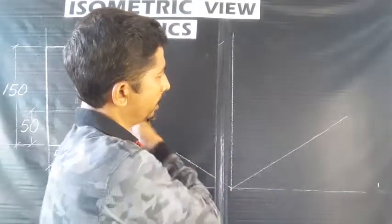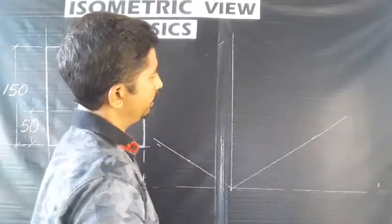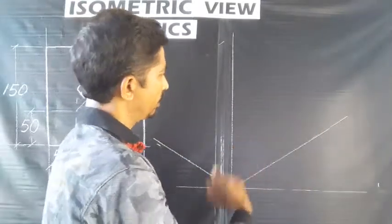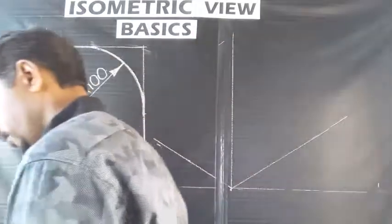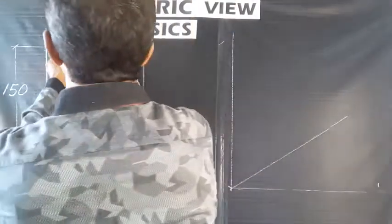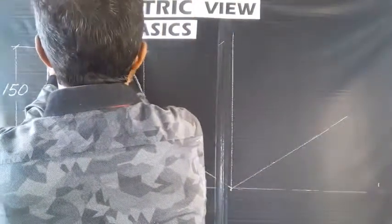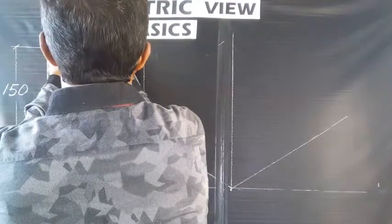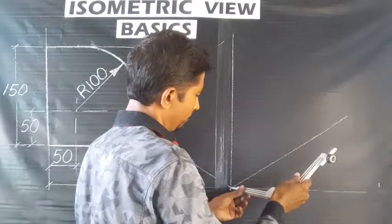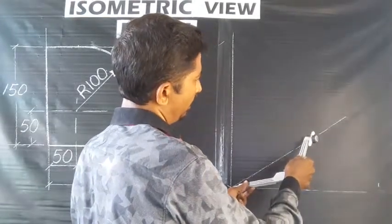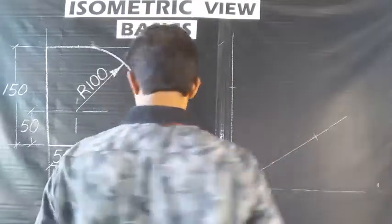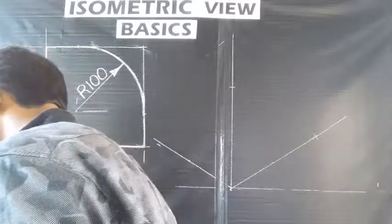The next step: directly measure and transfer. We have done 150mm on the isometric X-axis. That distance is also applied on the isometric Z-axis. In the next step, we don't need to do anything extra at this point.